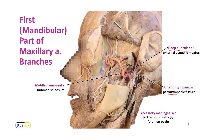The third branch is the middle meningeal artery — an important content of the foramen spinosum. It is the largest meningeal branch, supplying the meninges and skull bone, and is clinically the most important branch of the maxillary artery. It ascends deep to the lateral pterygoid, passes between certain related structures, and divides into an anterior division and a posterior division. The anterior division is important in relation to the pterion and its clinical significance.